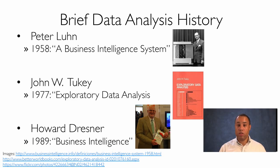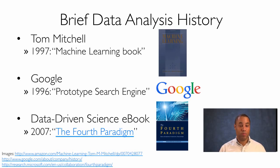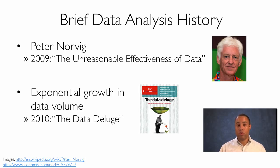Dresner is a modern business intelligence proponent. In 1997, Mitchell wrote a machine learning book that is still a bestseller today. In 1996, two Stanford PhD graduate students wrote a prototype search engine, which ultimately led to Google. Microsoft, in 2007, released a data-driven science e-book titled The Fourth Paradigm. Norvig proposed the unreasonable effectiveness of data — the idea that multiple small models and lots of data is much more effective than building very complex models. And The Economist, in 2010, published an issue titled The Data Deluge, around the exponential growth in data volume.